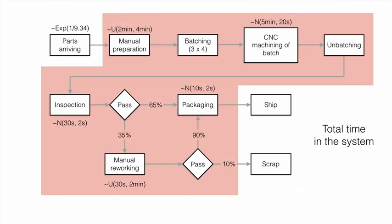This is quite relevant because at one level you are interested in studying the uncertainty of a particular process, such as the manual preparation, and you want to more accurately describe that uniform distribution between two and four minutes. But at a higher level somebody might be interested in your entire assembly line's total time in the system, because they may use it as a single source of uncertainty. So let's build this model — from parts arriving until they are either shipped or scrapped — in AnyLogic.